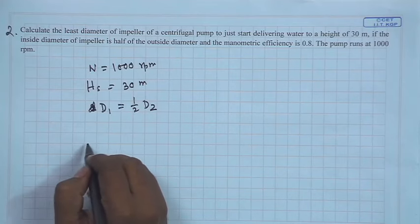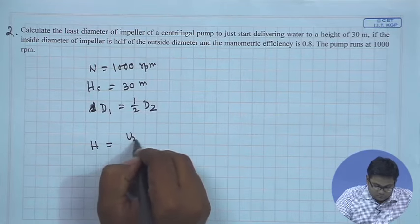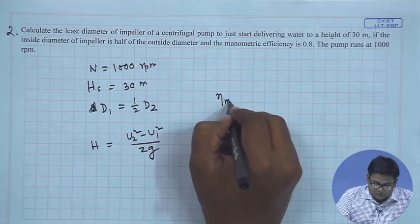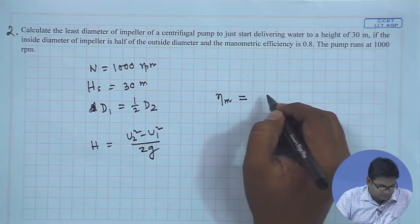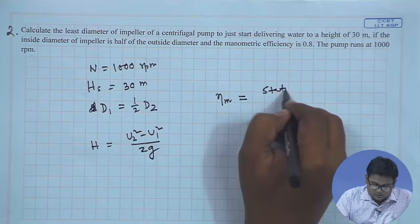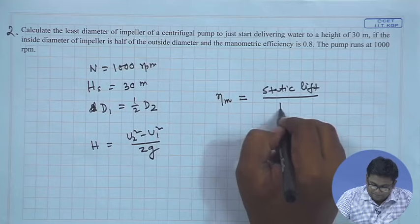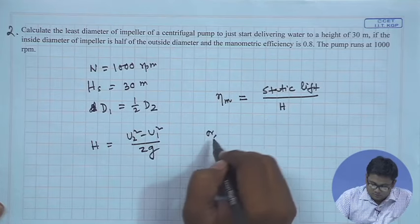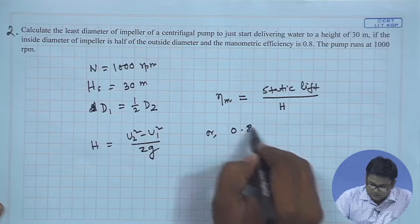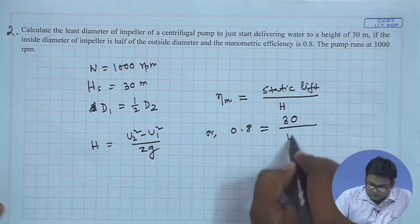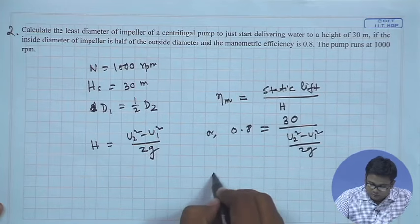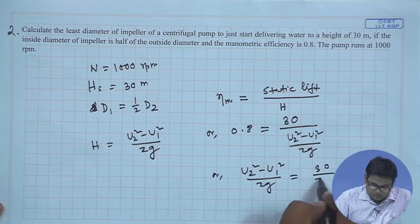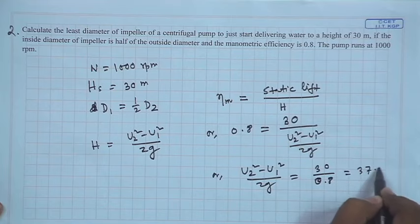When the pump is just starting, the head developed is the centrifugal head: H = (u2² - u1²) / 2g. The manometric efficiency is given by the static lift over the centrifugal head: η_m = static lift / [(u2² - u1²)/2g]. With η_m = 0.8 and static lift = 30 m, we get (u2² - u1²)/2g = 30/0.8 = 37.5 m.